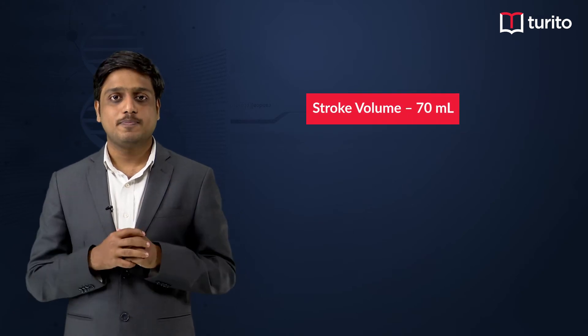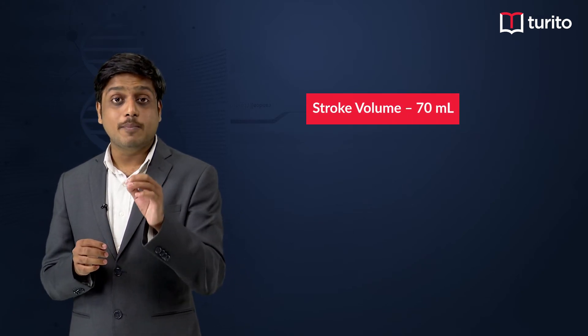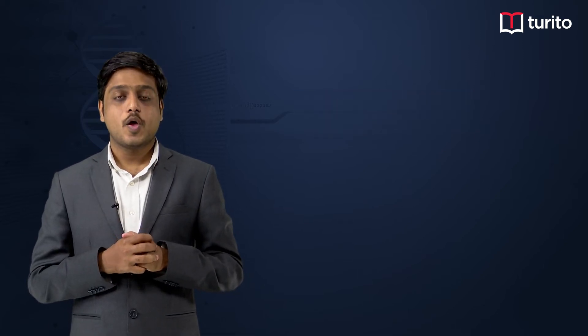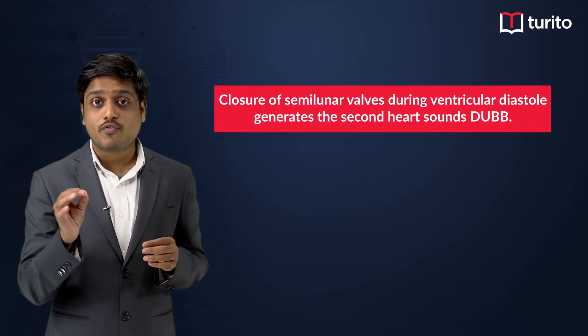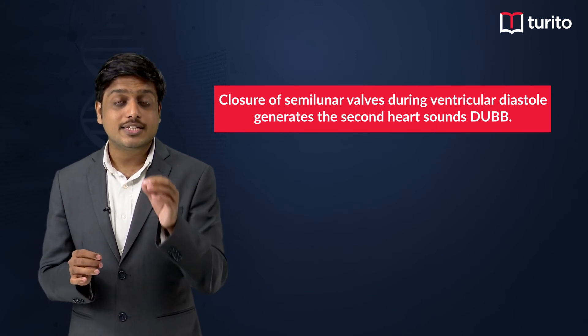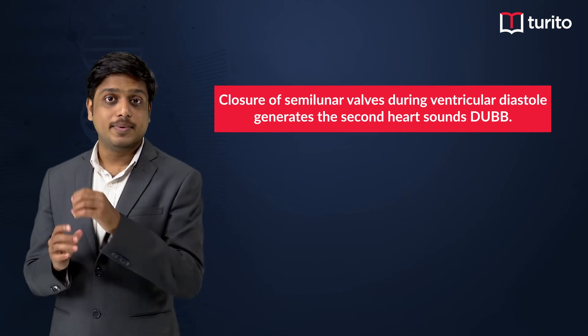The amount of blood pushed into the aorta for one contraction of the ventricle is called the stroke volume. Each stroke volume is about 70 ml of blood. Once the blood is pushed out of the ventricles, the ventricles start relaxing — this marks the ventricular diastole. As the ventricles start relaxing, the semilunar valves, which were open during ventricular contraction, now start closing. The closure of the semilunar valves during ventricular diastole produces the second heart sound, 'dubb.'